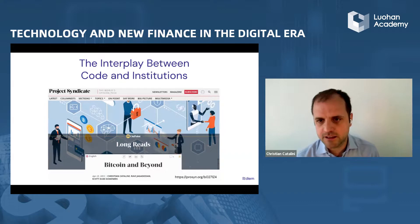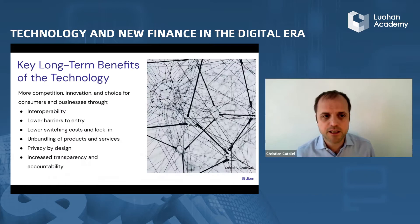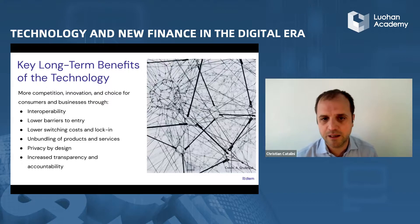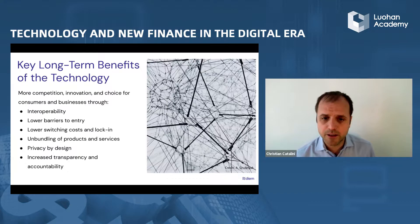At its core, you may think that this is just another instance of software eating the world. But really, there's a crucial interplay here between code, software, and complementary institutions allowing the technology to reach its full potential. There are a number of key long-term benefits: higher interoperability, lower barriers to entry, reduced switching costs and lock-in for different market participants. It's a technology that allows you to unbundle products and financial services that are currently bundled together in institutions such as banks. And there's also a lot of potential on privacy — new designs that allow you to embed privacy principles from the ground up — as well as increased transparency and accountability, which can be a double-edged sword.